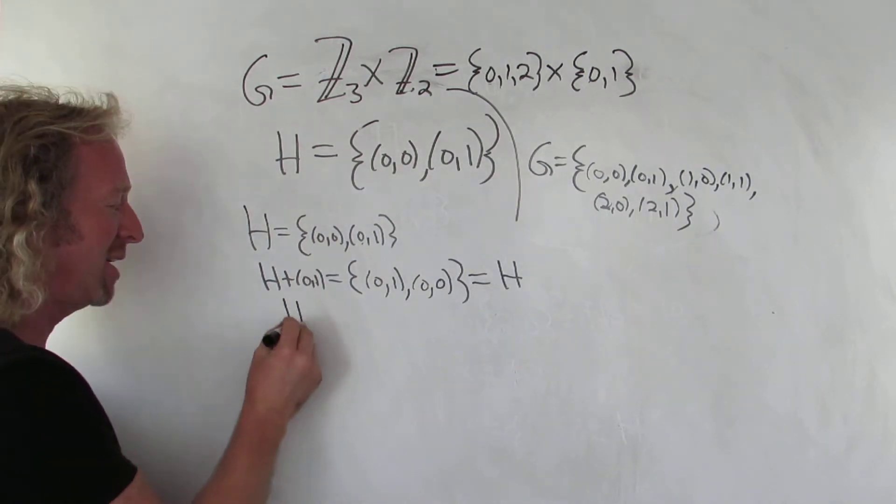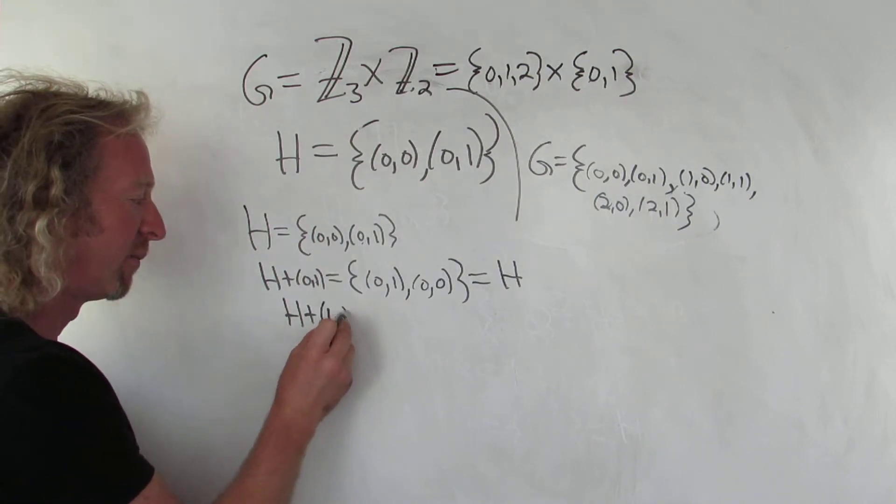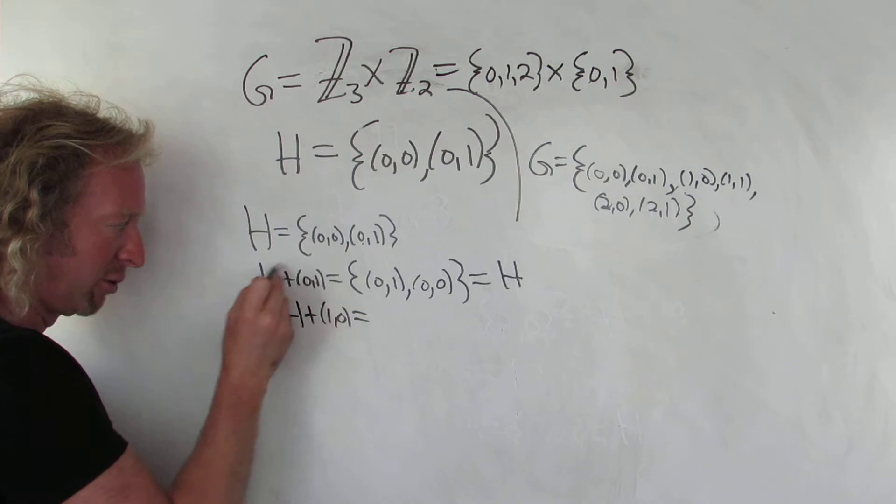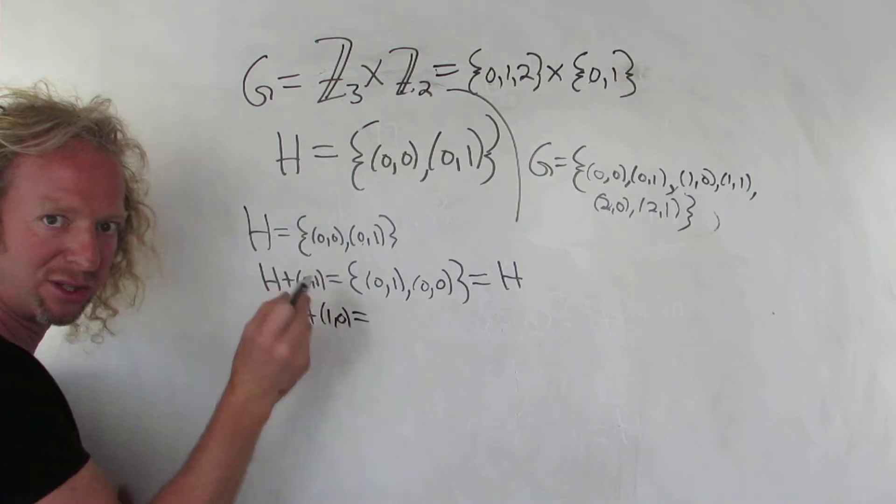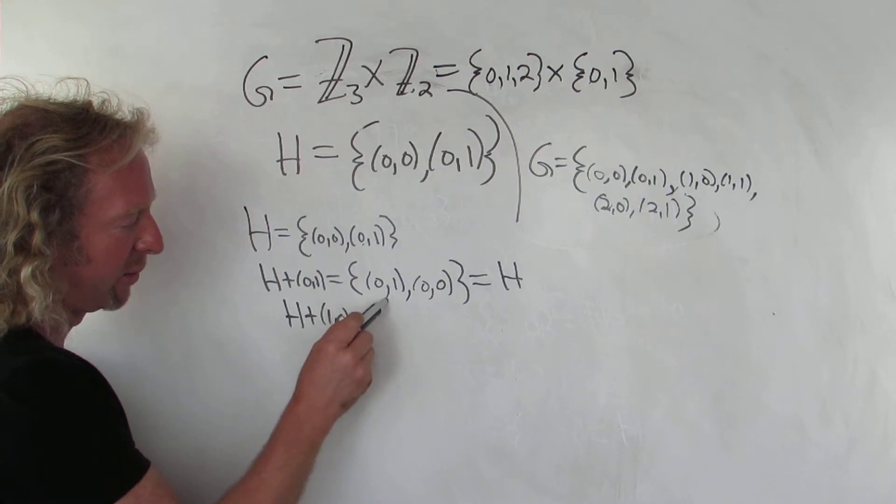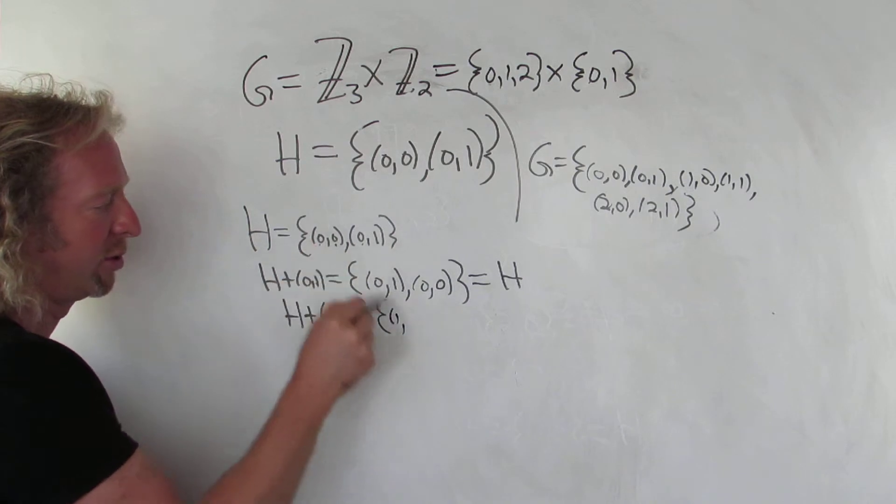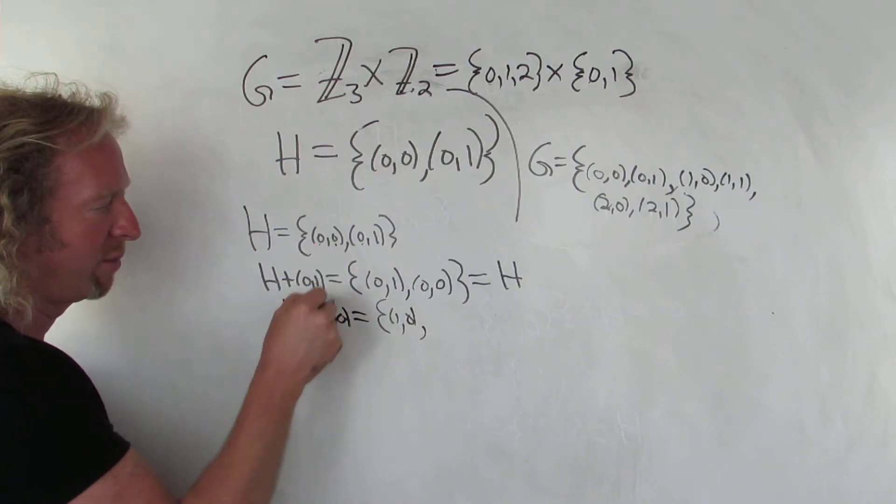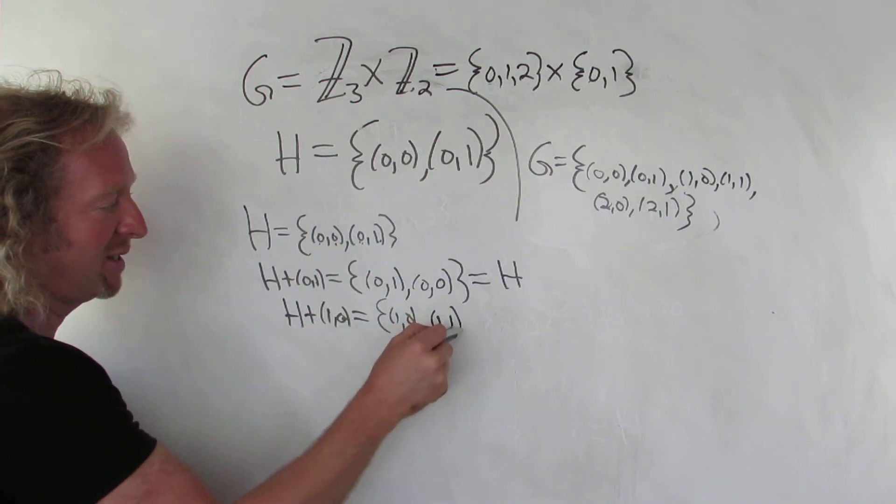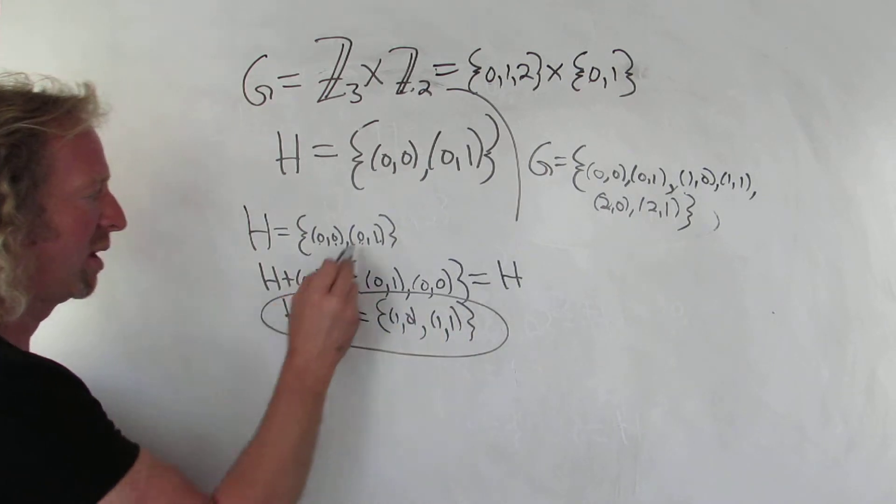Let's do H plus (1,0). Whenever you have an element that's already in your group and you add it, like when you're forming a coset, it's equal to H, right? It gets absorbed every time. So let's work this one out. This is going to be 1 plus 0, which is 1. 0 plus 0, which is 0. 1 plus 0, which is 1. 0 plus 1, which is 1. So that's a different coset. So that's going to be one of them.